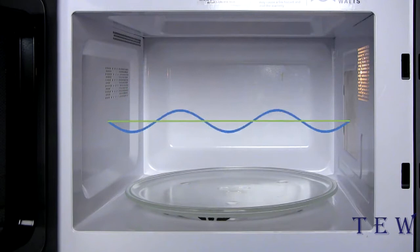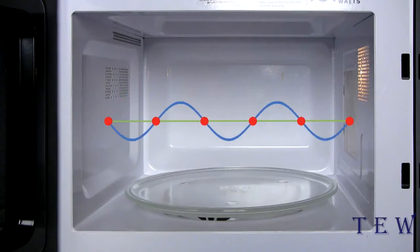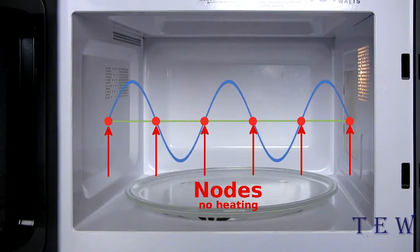The three-dimensional pattern of waves is difficult to predict, but the principle can be seen by looking at the waves in a single dimension. The peaks and valleys in the wave represent the greatest energy of the wave, while the nodes correspond to the cold spots inside the chamber.